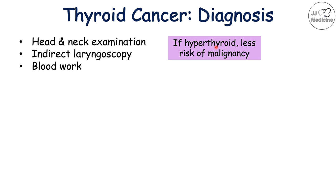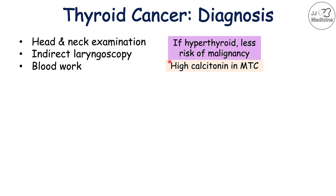It could actually be an active nodule, such as a toxic adenoma. If a clinician looks at calcitonin levels, there will be high calcitonin levels in patients who have medullary thyroid carcinoma — this is a cancer involving C-cells, and C-cells make calcitonin. So we will see high levels of calcitonin in medullary thyroid carcinoma.